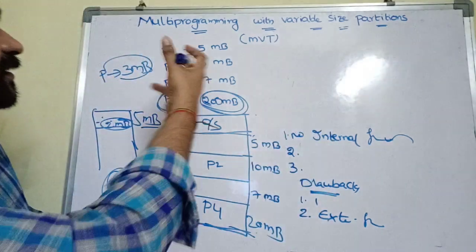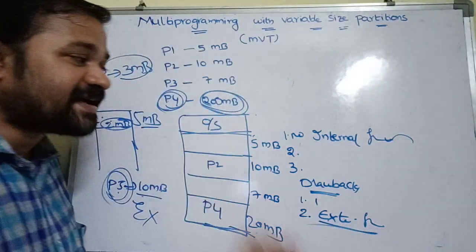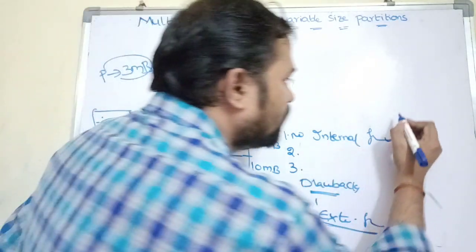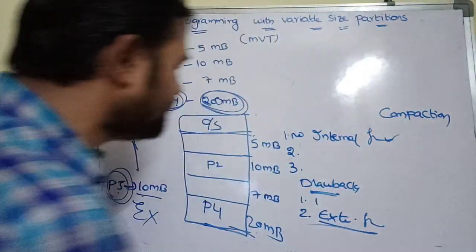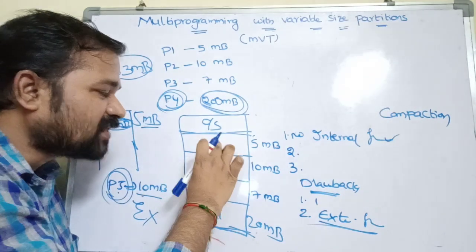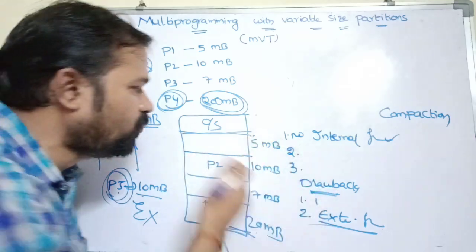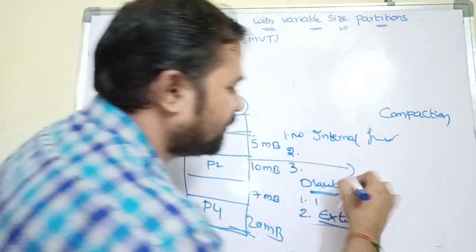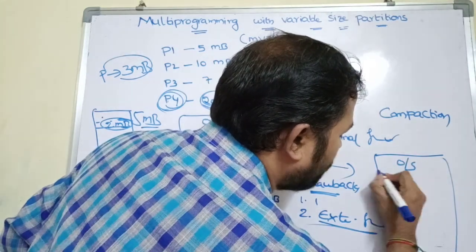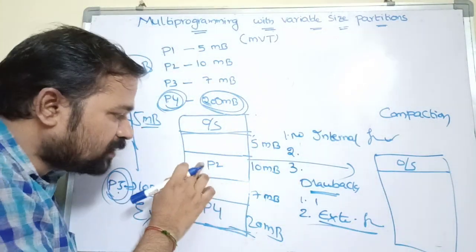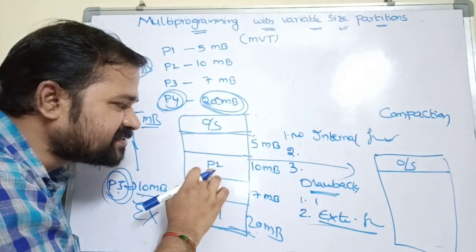This problem is known as external fragmentation — even though there is sufficient space available in main memory, the operating system can't allocate it for the process because the memory locations are non-contiguous. We can solve the external fragmentation problem with a technique called compaction, which means combining the free partitions and producing a new block.